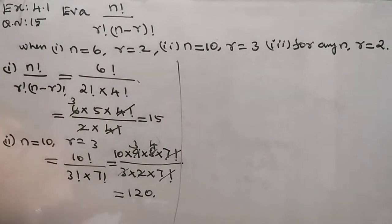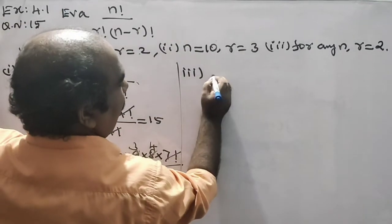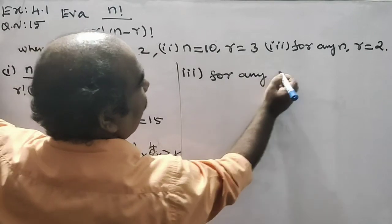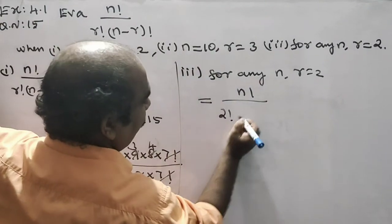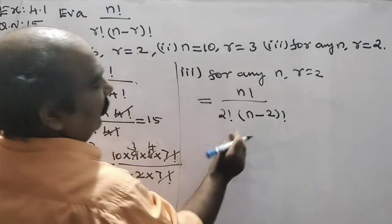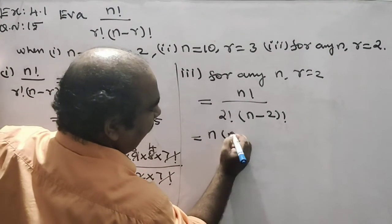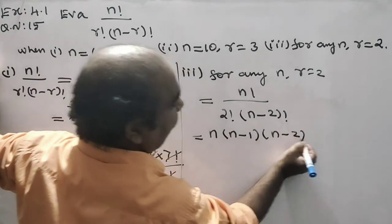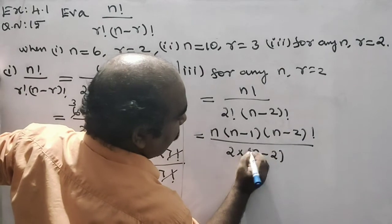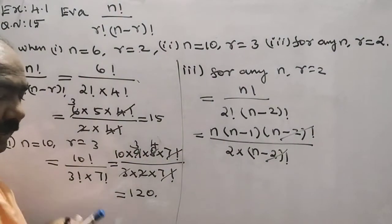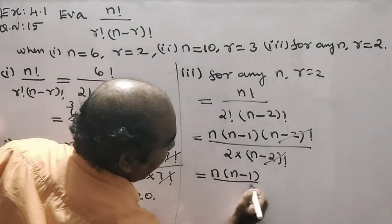Third problem: for any n, r equals 2. We evaluate n factorial divided by r factorial into n minus r factorial. With r equals 2: n factorial divided by 2 factorial into n minus 2 factorial. Expanding the numerator: n into n minus 1 into n minus 2 factorial. The n minus 2 factorials cancel, giving n into n minus 1 divided by 2.